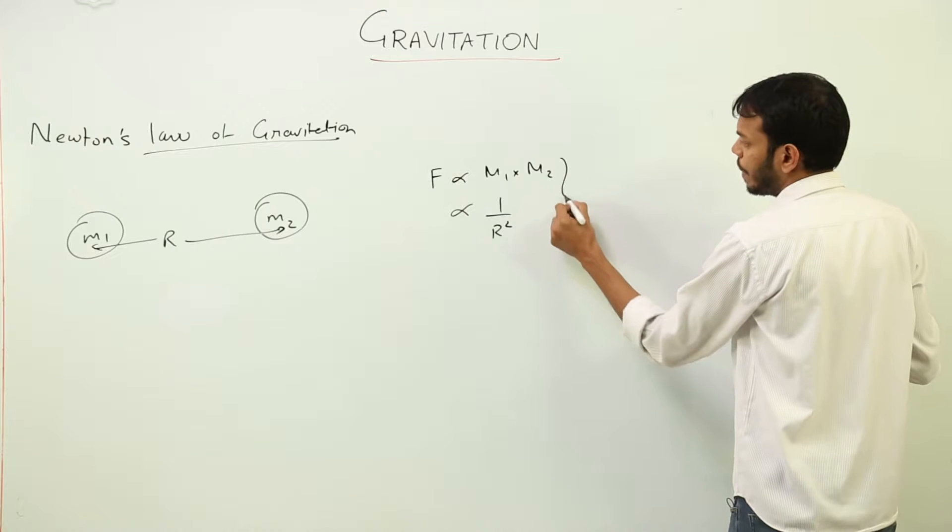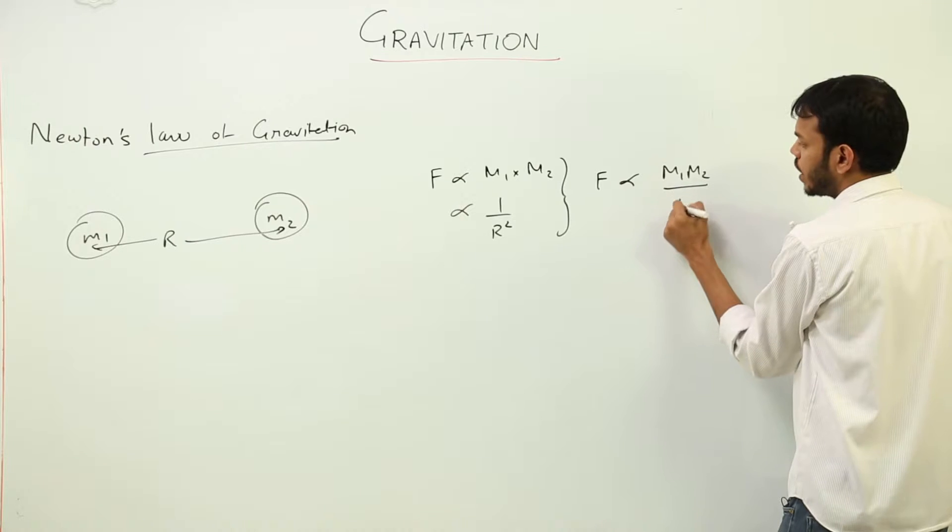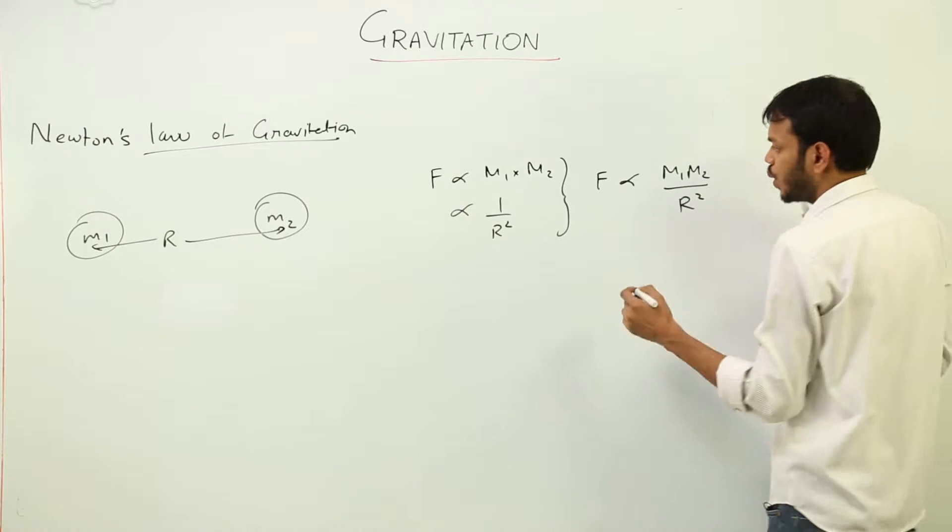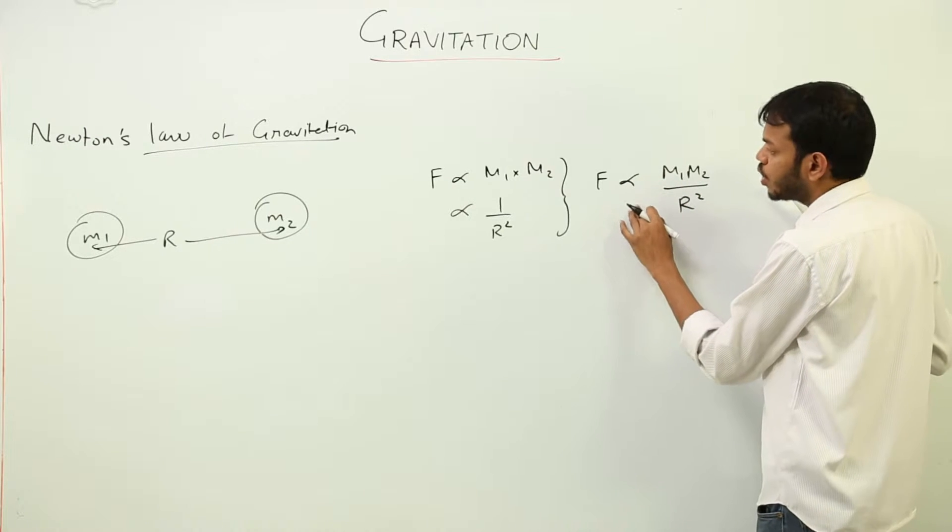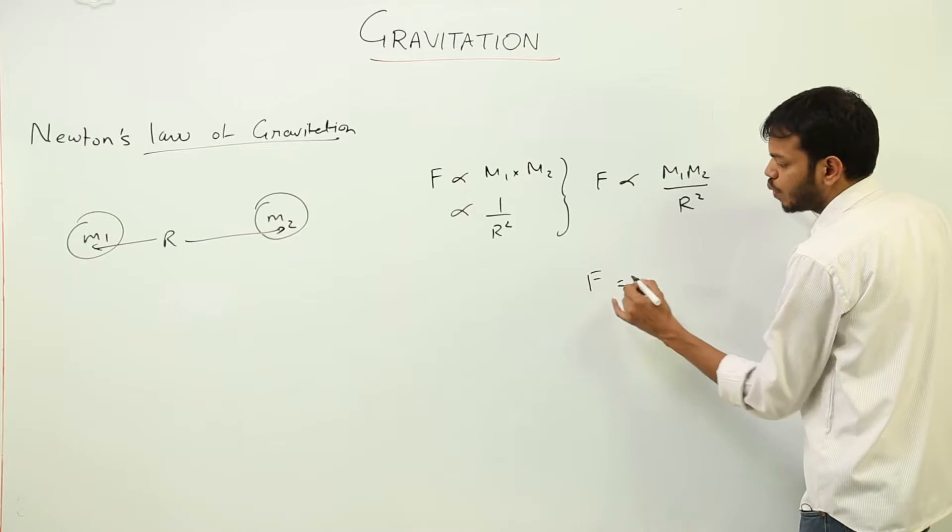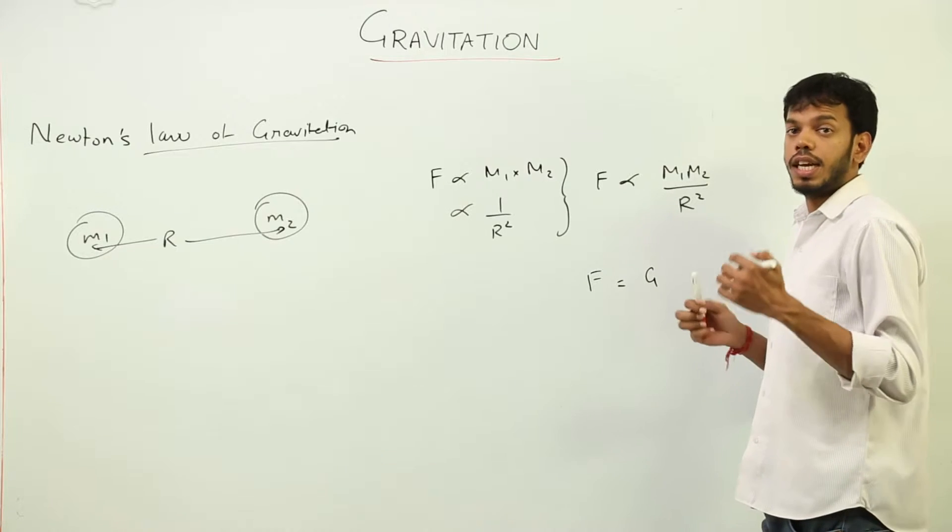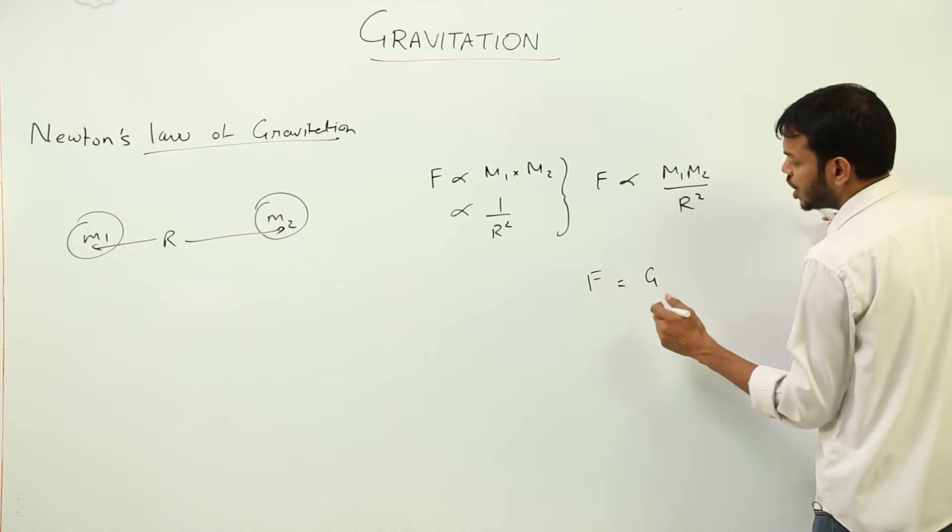So if you combine these two facts, you will get this force is proportional to M1 M2 over R square. So there will be a constant of proportionality involved in this case, that is the universal gravitational constant which is represented by capital G.